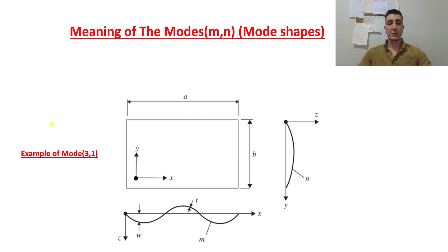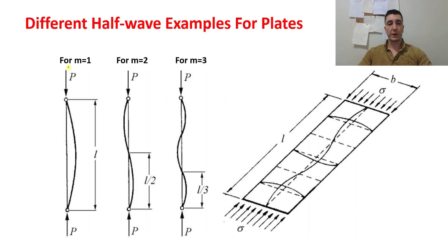Let's continue with the meaning of modes, also called mode shapes. M is the half-wave number in the X direction — when M equals 3, three half waves will be observed in the X direction. N is the half-wave number in the loaded direction, which is the Y direction, and is usually 1. For example, when M equals 1 there will be one half wave, when M equals 2 you observe two half waves, and when M equals 3 you observe three half waves in the long edge.